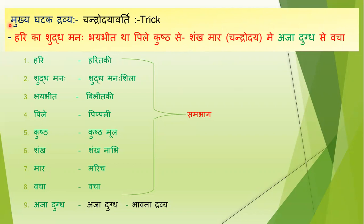To contents kya hue: 'Hari' is for Haritaki; 'shuddha manaḥ shila' — shuddha man for shuddha manaḥ shila; 'bhaybeet' — shabd for Bibhitaki; 'pile' for Pippali; 'kushht' for Kushtha mool; 'shankh' is for Shankha naghi; 'maar' is for Marich; 'chandra udaya' is the name of the varti itself — for the trick; and 'ajadubd' aapka bhawna dravya hai; aur 'bacha' is the eighth ingredient.